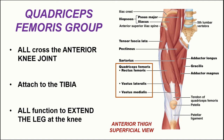The quadriceps femoris muscle group is another synergist group. As the name implies — quad meaning four — there are four muscles located on the anterior thigh. Three visible superficially are the rectus femoris, the vastus lateralis, and the vastus medialis. A fourth, the vastus intermedius, lies deep to the rectus femoris. All have origins on the anterior femur and tendons extending across the knee joint to insert onto the tibia, functioning to extend the leg at the knee joint.